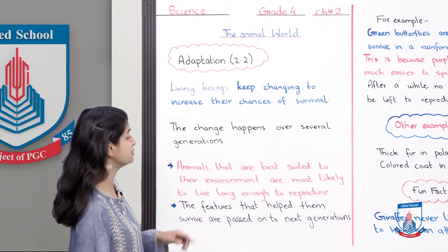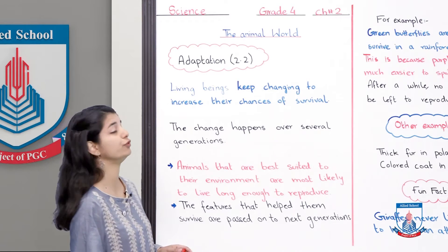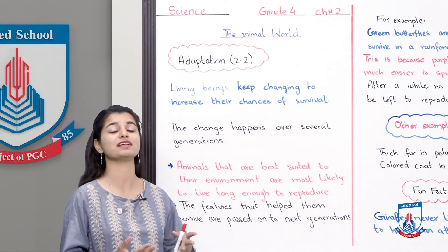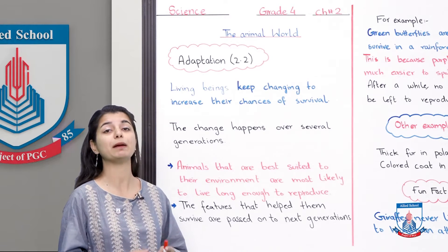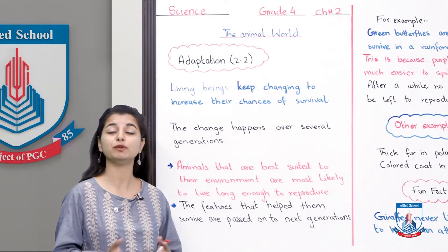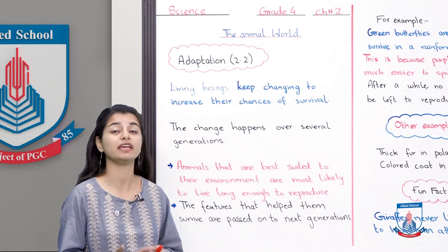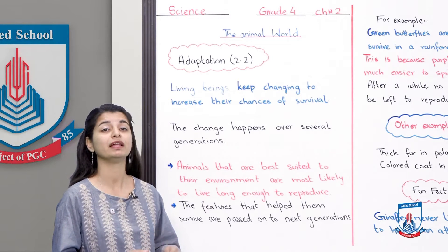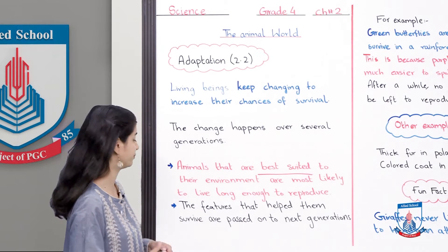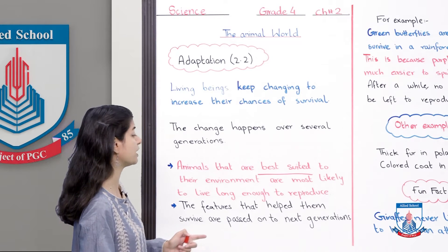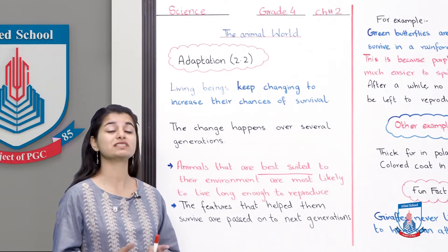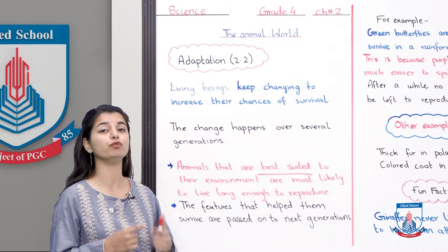Animals that are best suited to their environment are most likely to live long enough to reproduce. Those animals that cannot handle their environment — the climate and conditions — will die and will not reproduce. That is why only those animals which are best suited to their environment can reproduce. The features that help them survive are passed on to the next generations.